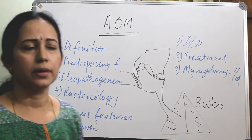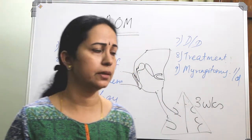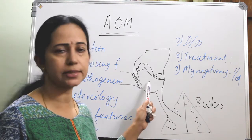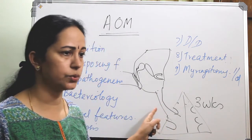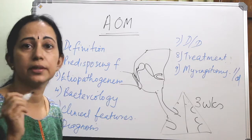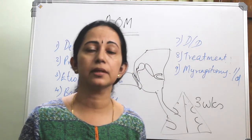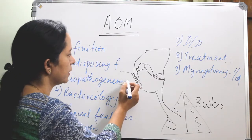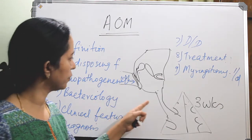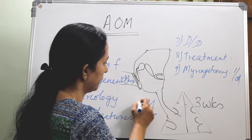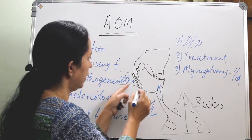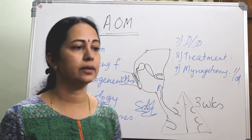Etiopathogenesis: the route of infection — infection should reach the middle ear. The commonest entry is through the eustachian tube. Other routes: if there is a pre-existing perforation of the tympanic membrane, bacteria can come through it. If there is a fracture of the temporal bone, infection can enter that way as well.